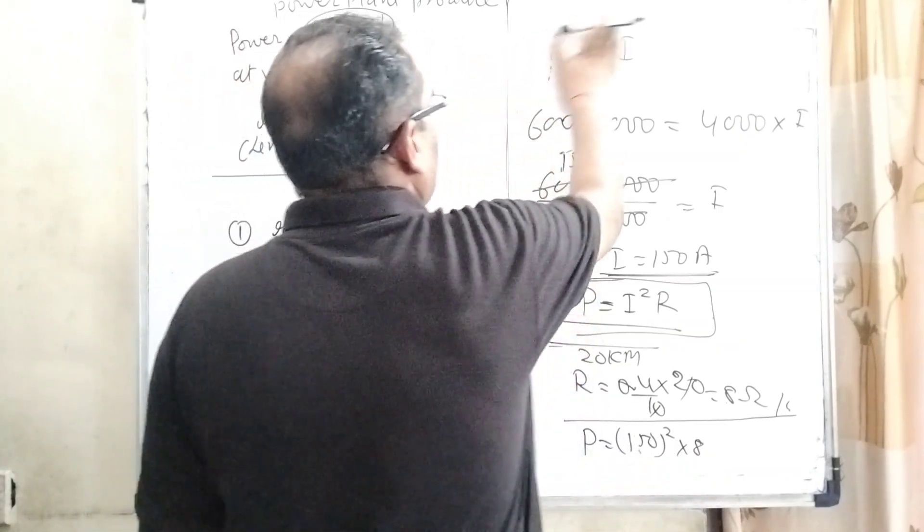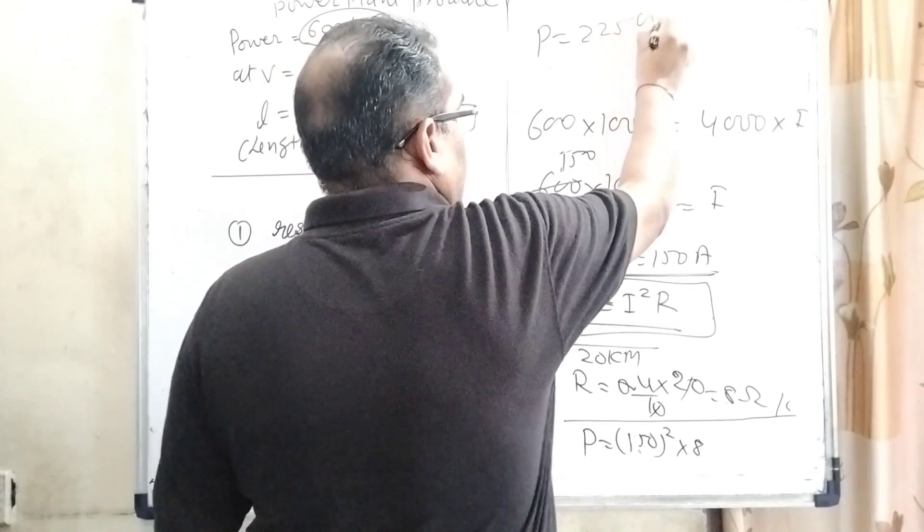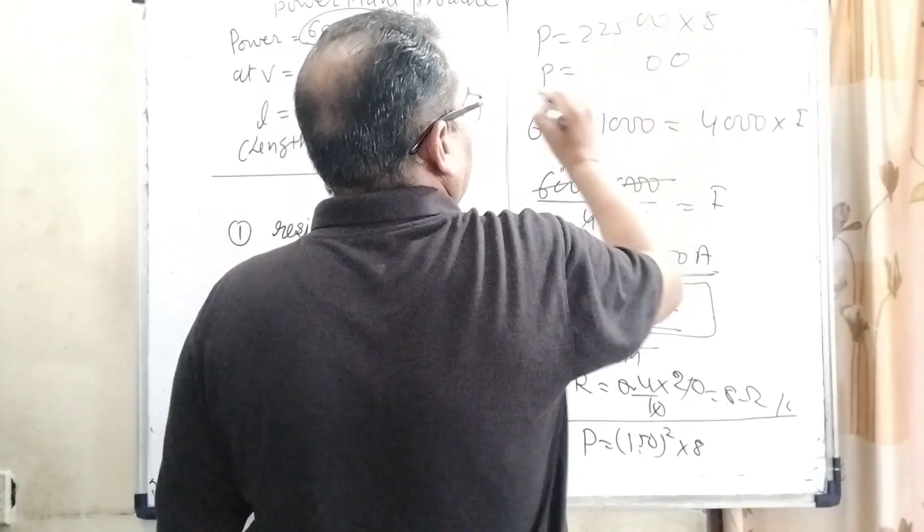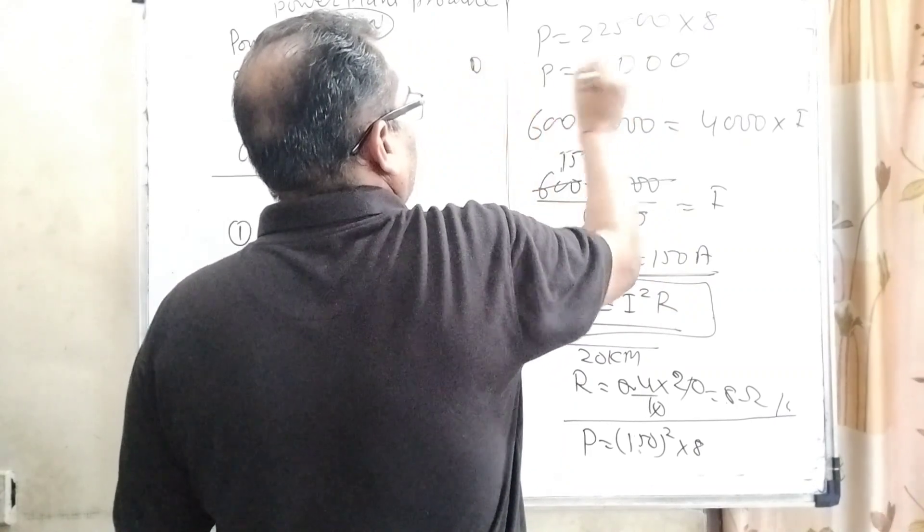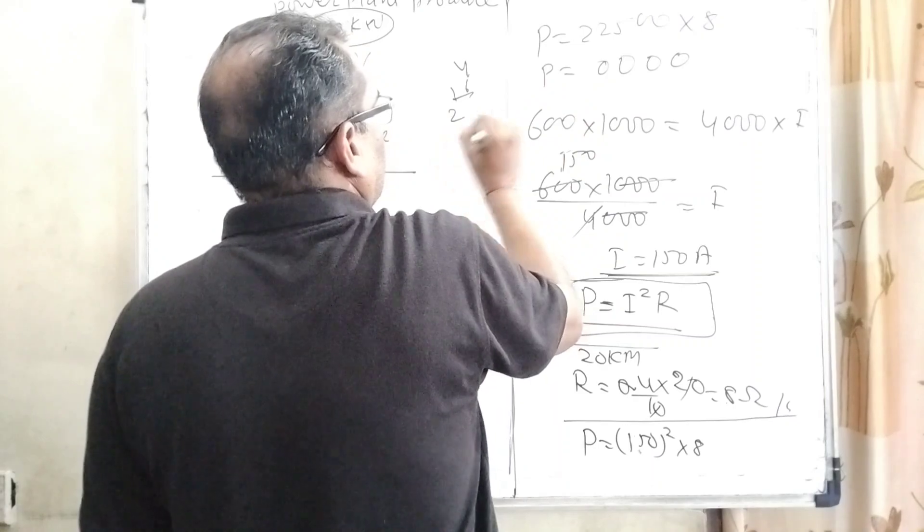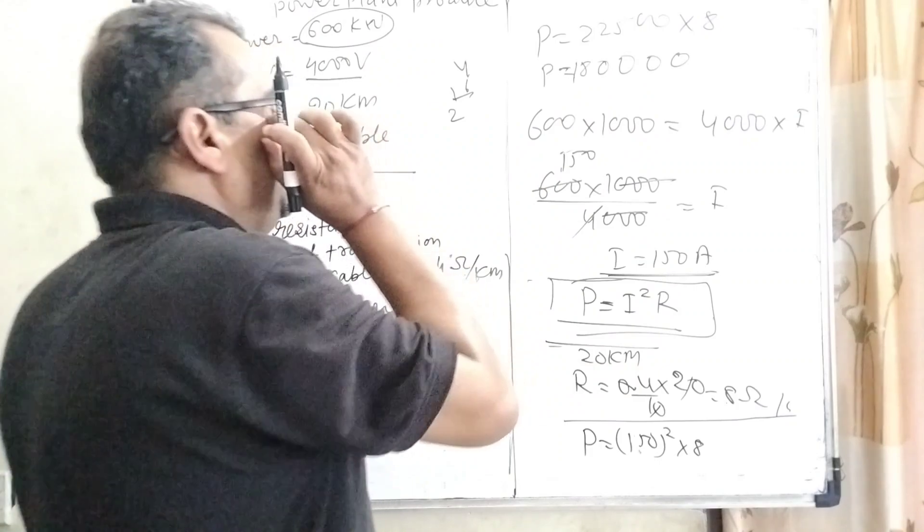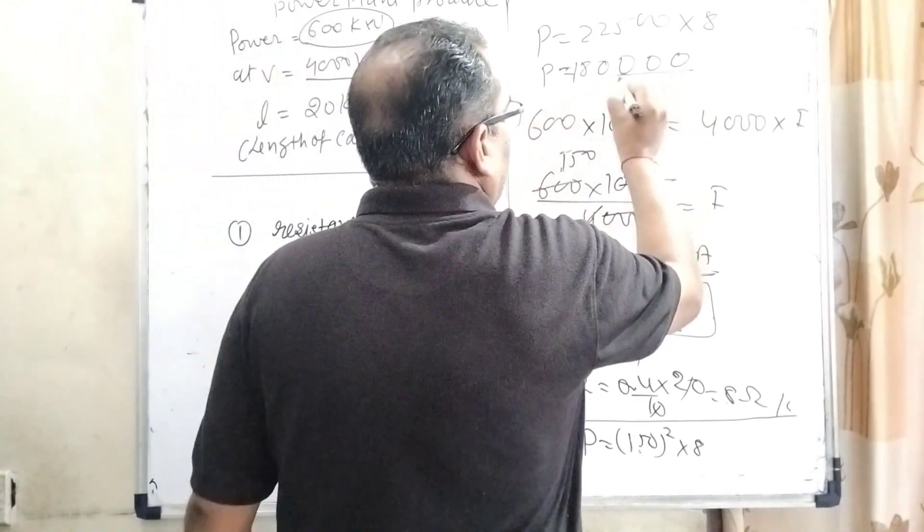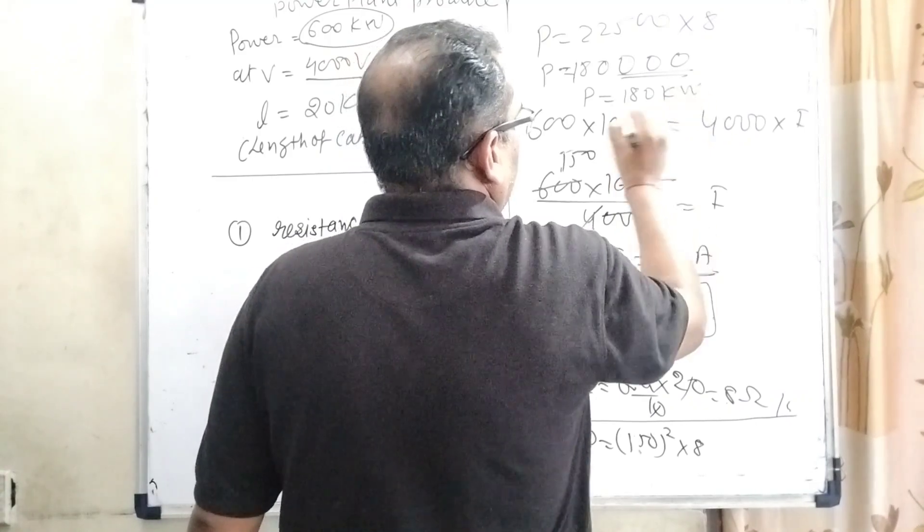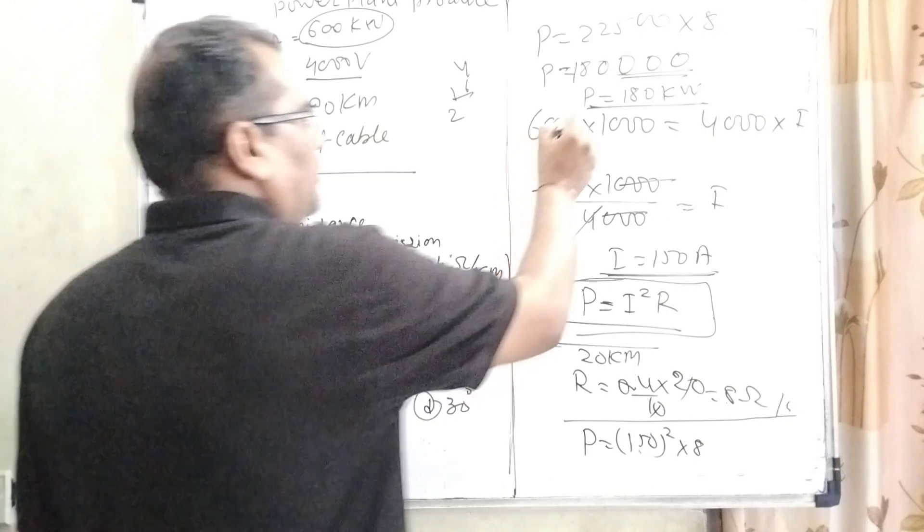This is equal to 22500 into 8. And we get here 180 kilowatt. So here we get 180 kilowatt power.